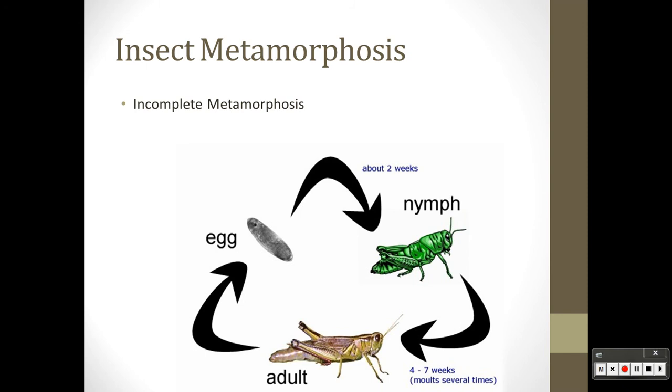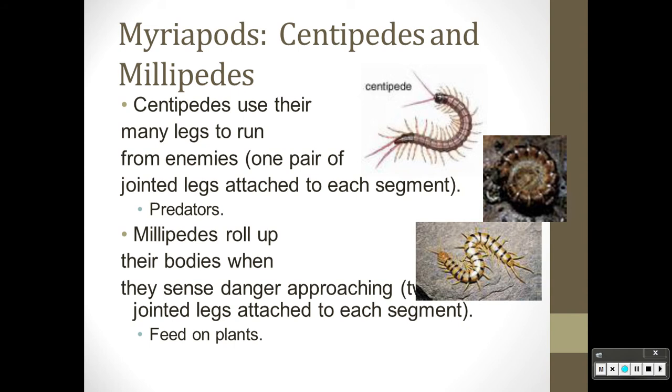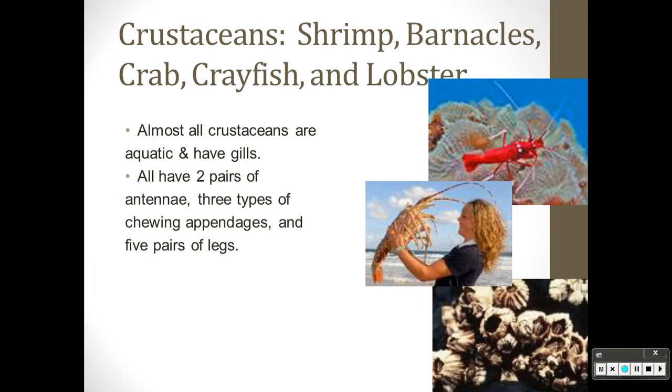Arachnids: spiders, scorpions, ticks, and mites. Myriapods are centipedes and millipedes. Again, there's their features.